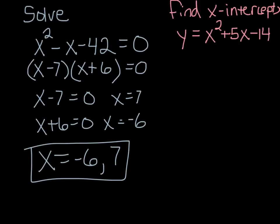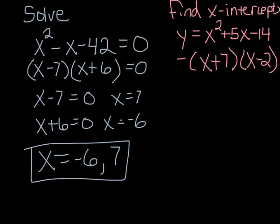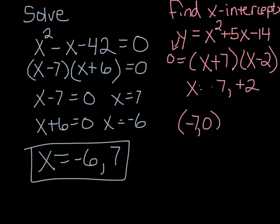If you were asked to find the x-intercepts, you would still factor. Factors of negative 14 that add to give positive 5 would be positive 7 and negative 2. You set it equal to zero because x-intercepts are where y is 0, giving x equals negative 7 and positive 2. But since x-intercepts are points on the graph, you would write negative 7 comma 0 and 2 comma 0 — as ordered pairs.